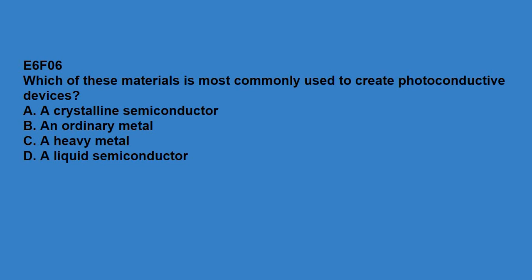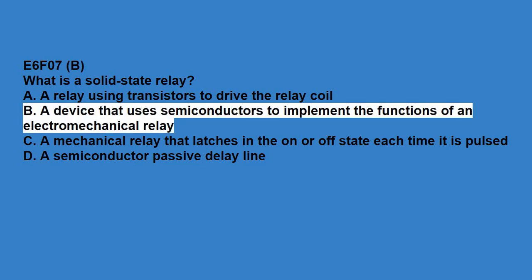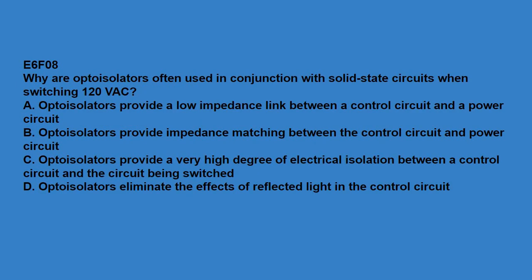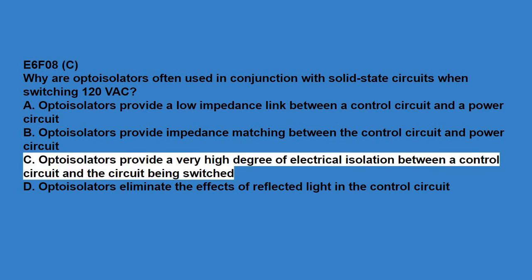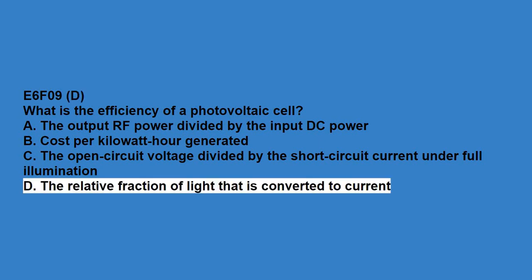E6F06: which of these materials is most commonly used to create photoconductive devices? A crystalline semiconductor. E6F07: what is a solid-state relay? A device that uses semiconductors to implement the functions of an electromechanical relay. E6F08: why are opto-isolators often used in conjunction with solid-state circuits when operating 120 volt AC? Opto-isolators provide a very high degree of electrical isolation between a control circuit and the circuit being switched. E6F09: what is the efficiency of a photovoltaic cell? The relative fraction of light that is converted to current.